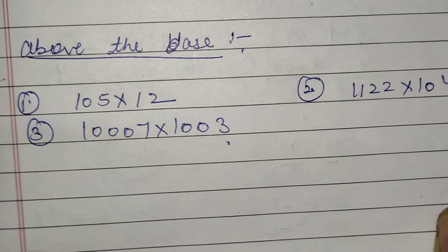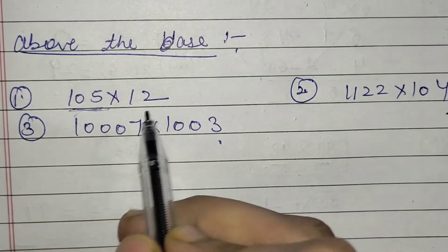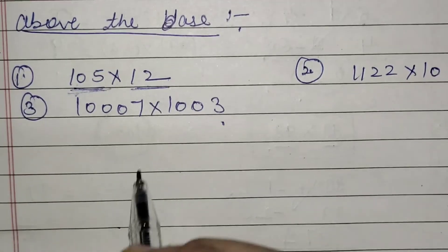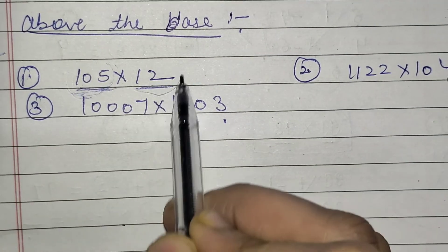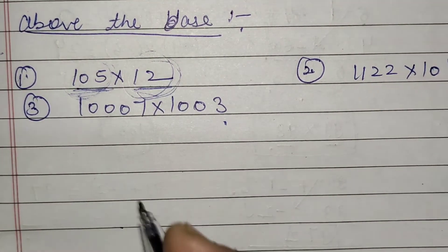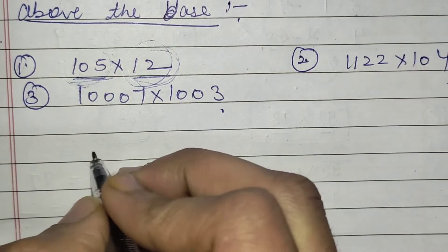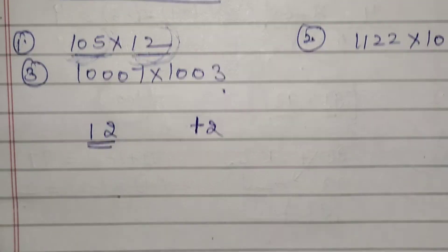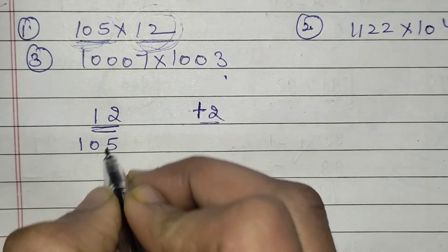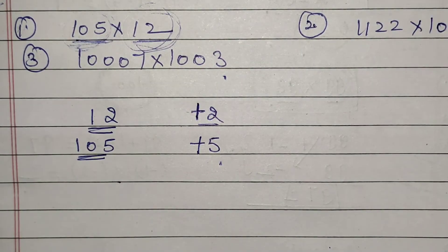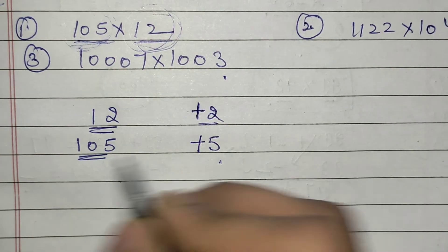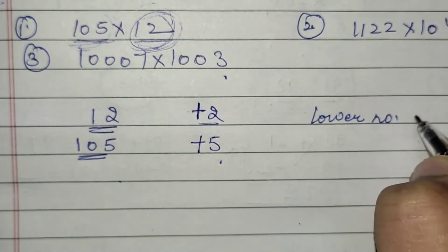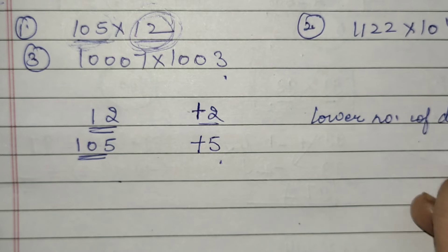Now, if the given numbers are above the base, when both numbers were near to the same base there was no difference while doing addition or subtraction. But when the numbers are near to different bases, there is a small twist in the calculation. For example, 12 is how much above 10? It is above by 2. And 105 is how much above 100? It is above by 5. Check that the lower number of digits is 1.